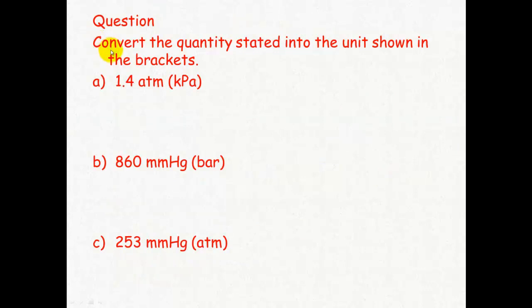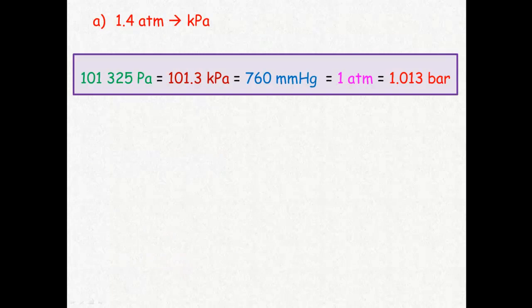So here's some example questions. Convert the quantity stated into the unit shown in brackets: 1.4 atmospheres into kilopascals, 860 millimeters mercury into bars, and 253 millimeters mercury into atmospheres.